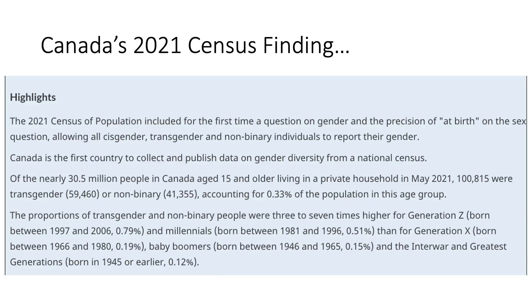However, it's also possible that the declining birth rate will accelerate. The 2021 Canadian census included new options for reporting a person's gender, and the census revealed that of the 30.5 million Canadians age 15 and older, 0.33% self-identified as transgender or non-binary. The Canadian census also pointed out the proportion of transgender and non-binary people among Gen Z is three to seven times higher than for older generations.